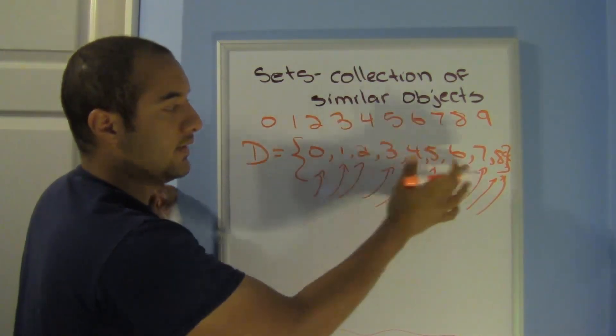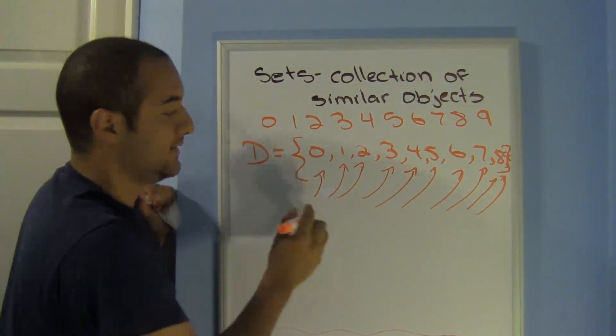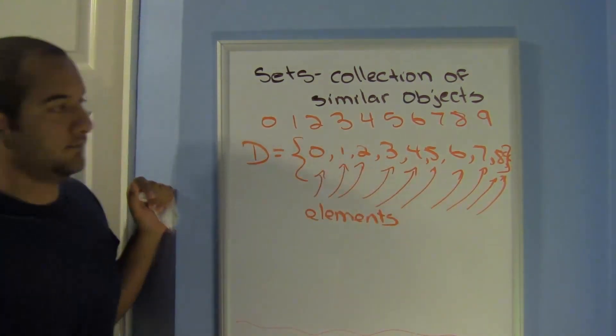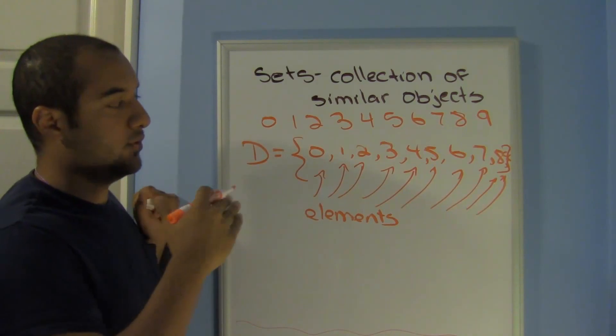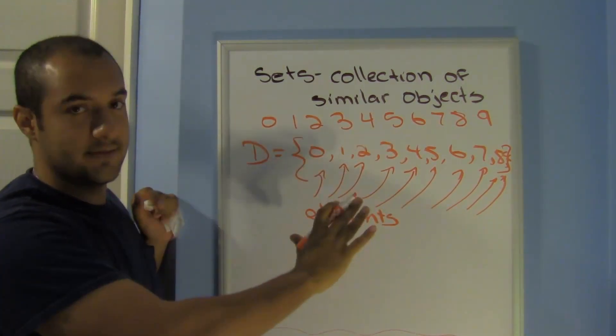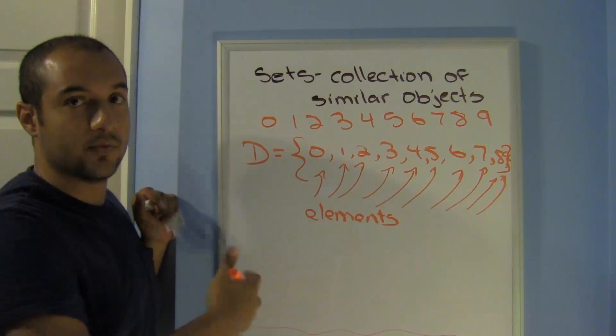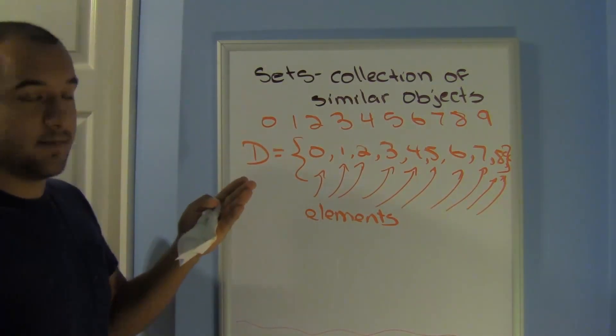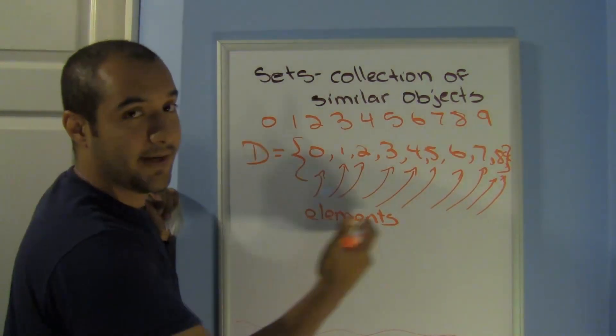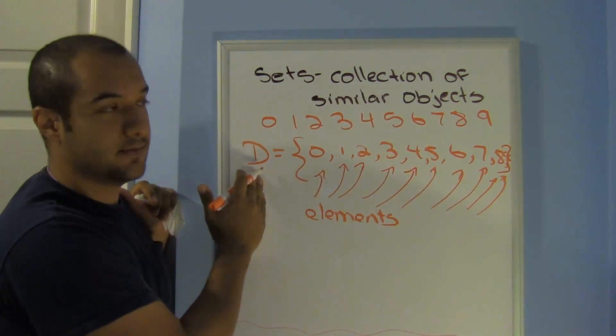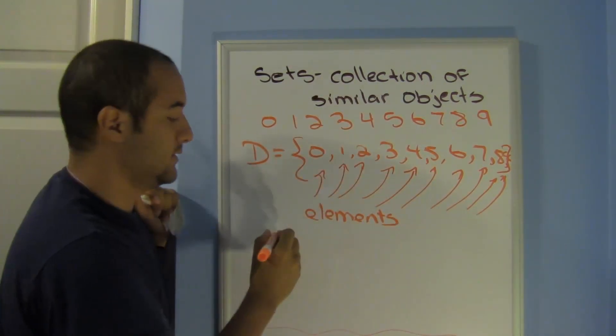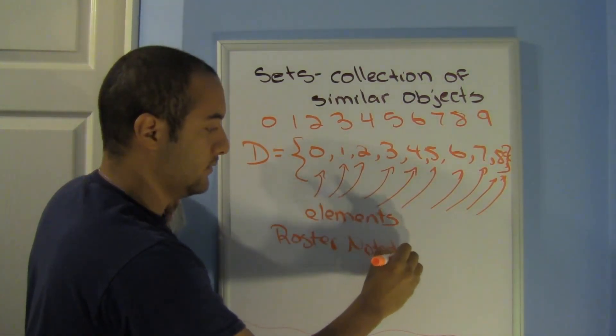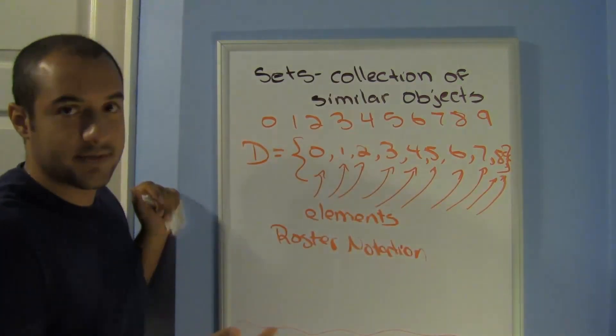So these are all elements of the set D. And notice that I've put everything that was in this set, all these digits. So this is called the roster method, like you would have a roster for classes. It has everybody's name on it. Here I'm listing all my elements for D. So this is the roster notation, or roster sets.